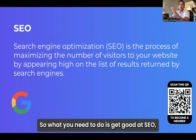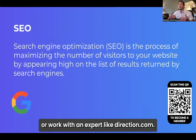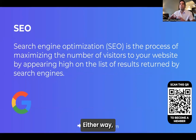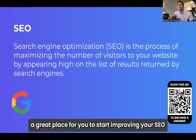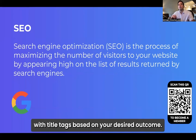So what you need to do is get good at SEO — either learn it on your own or work with an expert like Direction.com. Either way, a great place to start improving your SEO is by creating landing pages on your website with title tags based on your desired outcome.